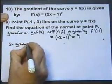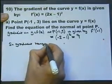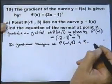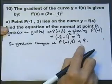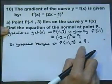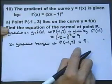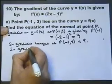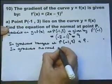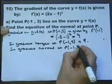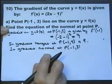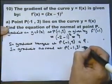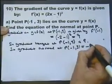So gradient of tangent at P is 9. This really is just helping get my head around the question, helping the examiner follow my train of thought. Now I want the normal, so the gradient of the normal at P. Because the tangent and normal are at right angles, the gradient of the tangent multiplied by the gradient of the normal must always come to minus 1. Therefore this will equal minus 1 ninth.